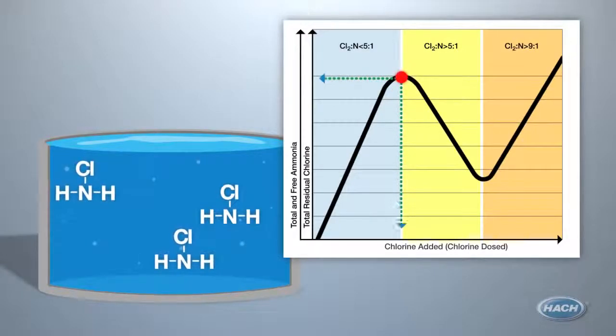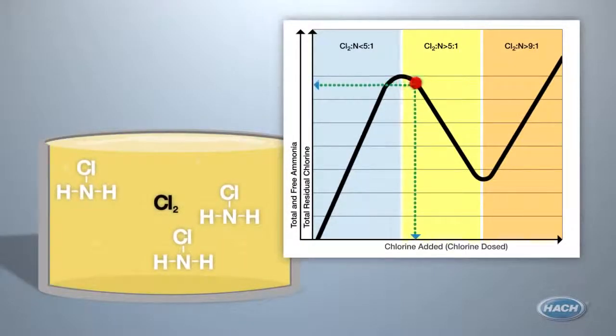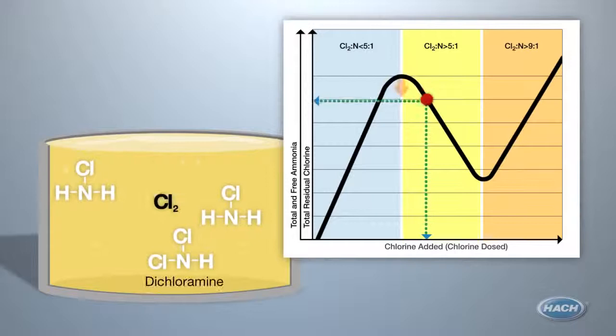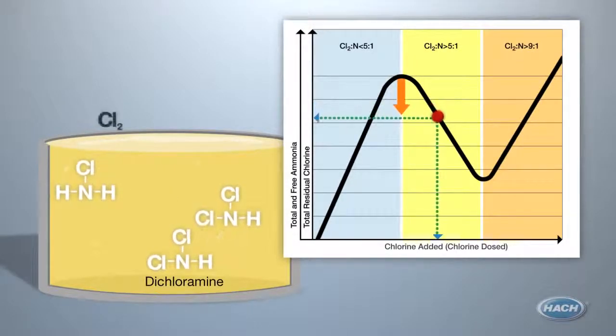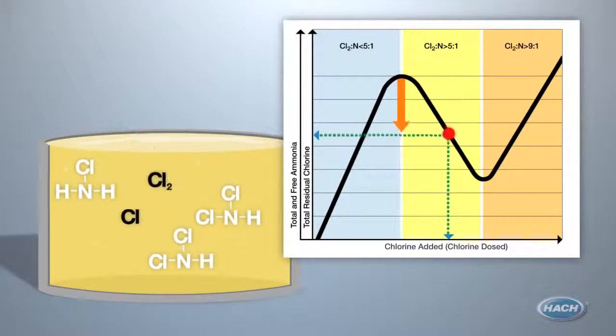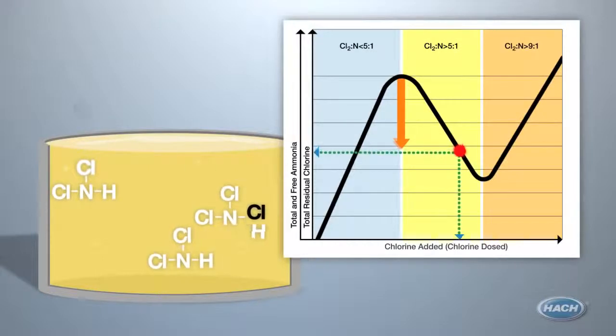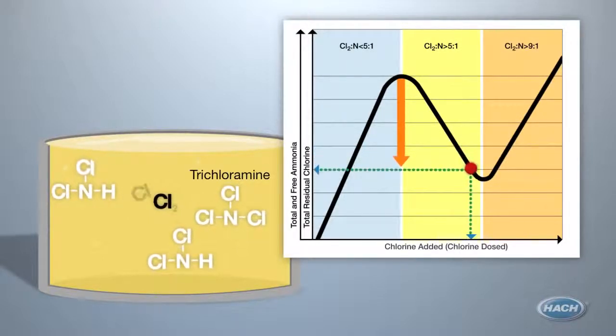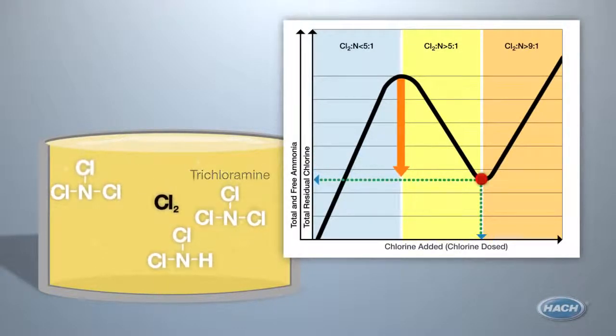If you continue to dose chlorine past this state, you begin to experience di- and finally trichloramination. These states are not ideal. It causes your chlorine residual to drop radically, although you are adding more chlorine. You will experience taste and odor issues when you are in this zone and your disinfecting power is drastically cut.